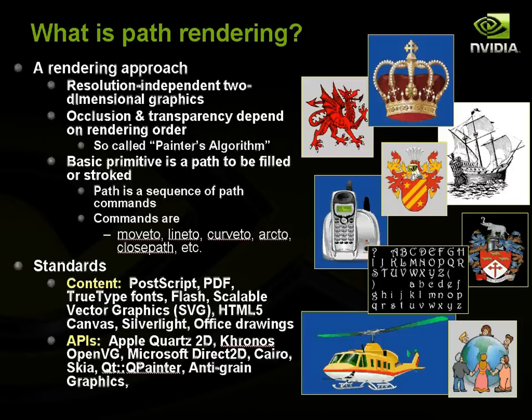There are a lot of different standards that incorporate path rendering. PostScript is probably the oldest standard. PDF, TrueType fonts, Adobe's Flash, and web pages — the Scalable Vector Graphics standard or SVG in HTML5, HTML5 Canvas, Silverlight, and Office drawings are all examples of path rendering content.